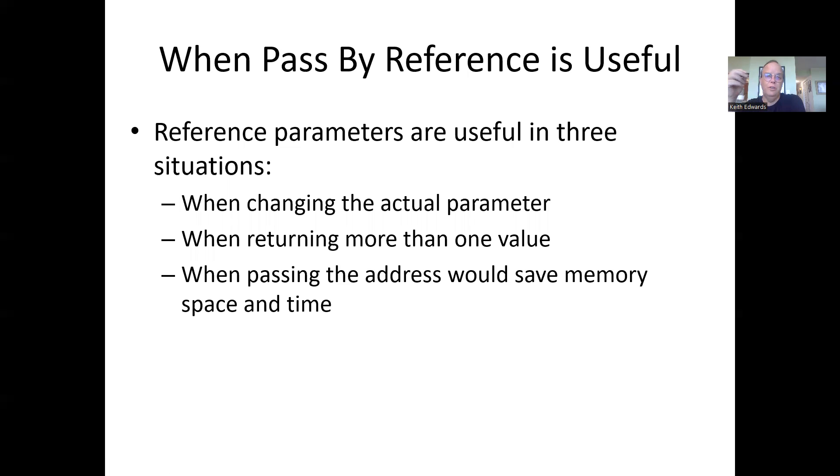Reference parameters are useful because they allow us to change things back in main or the calling function. They're useful when we're changing the actual parameter, like getting input or modifying something, when we're returning more than one value, and when passing the address would save memory space and time. We'll see that when we get into larger structures such as classes.